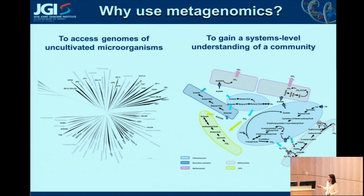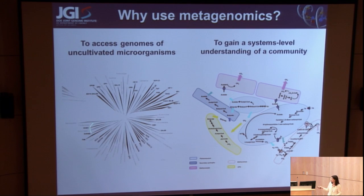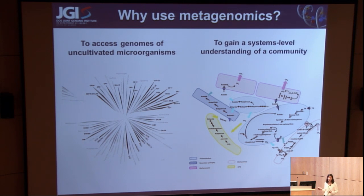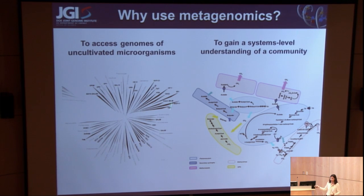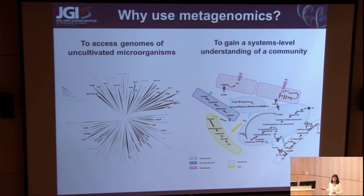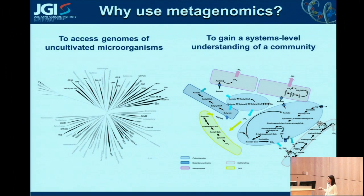One reason is to access the genomes of uncultivated microorganisms. This is a bacterial phylogenetic tree, and everything in black is phyla that don't have cultivated representatives. If you were to only sequence bacterial genomes from isolate organisms, you'd just be looking at the gray stuff and you'd never know what was going on in all these other branches. Many of these uncultivated organisms, whether in novel phyla or inside phyla with sequenced representatives, have important functions in the systems that they live in.